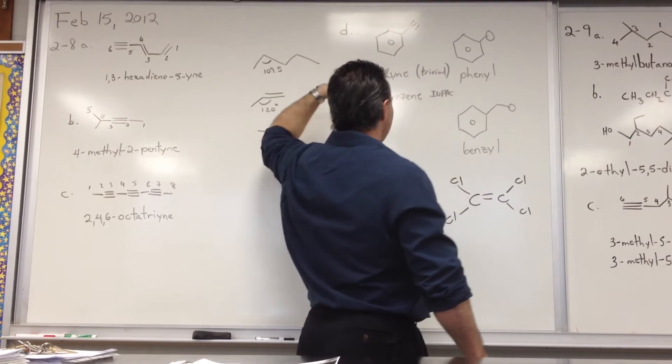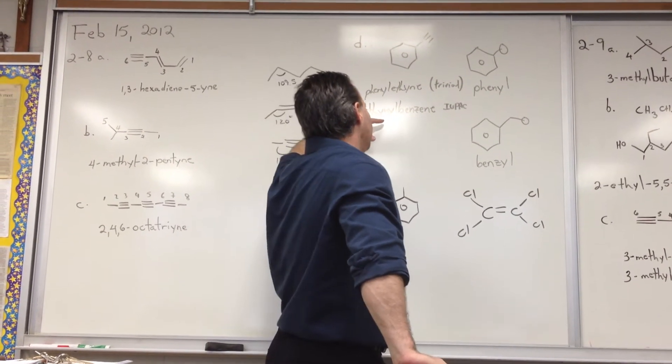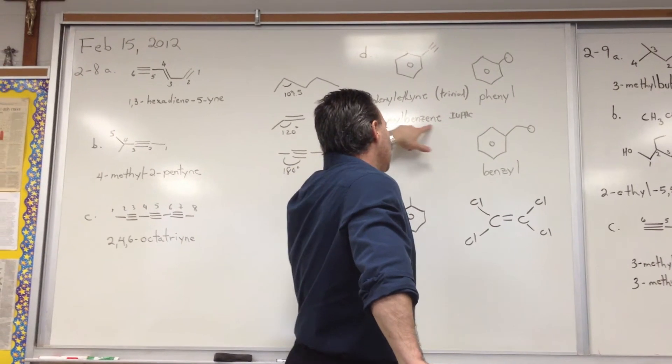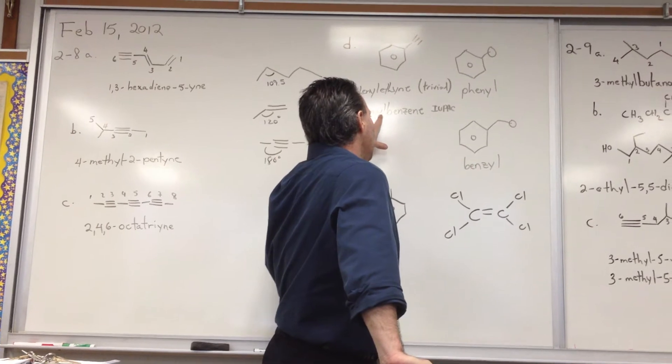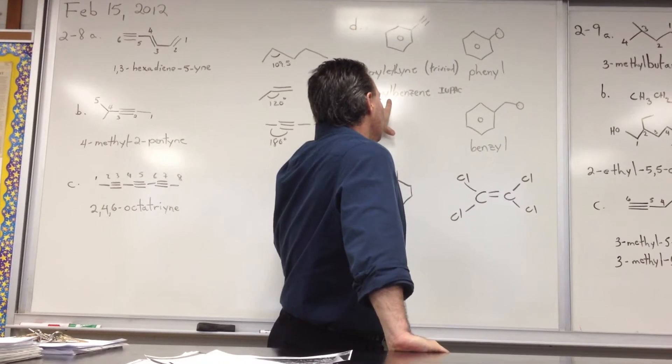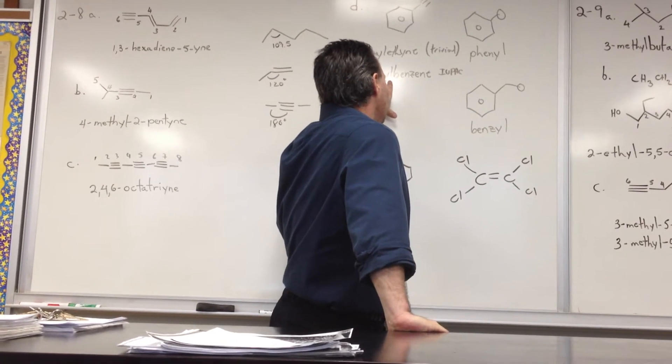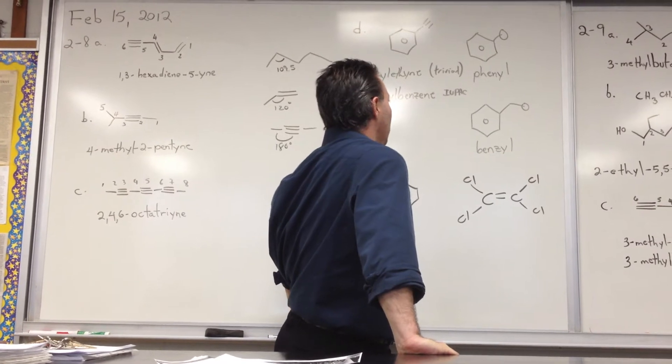So if we're going to follow the IUPAC rules, you have to name it as a benzene with an acetylene group. So when you have ethyl as a substituent, you add a -yl to the end of it to show that it's a substituent. So it's ethynylbenzene. That's the correct IUPAC name.